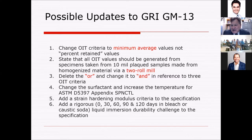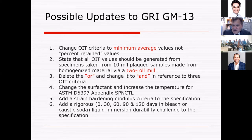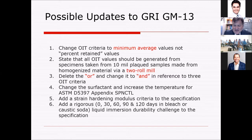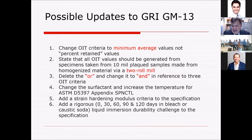What that minimum average value would be is going to be horse trading at its best. Second: state that all OIT values are from a 10 mil plaque made from homogenized material. The best homogenizing procedure we know is a two-roll mill — that's the best of the three techniques out there. This is going through ASTM and reared its head last week at ASTM D35 in both standard and high pressure. Third: I know the folks at Queens would like an 'and' instead of an 'or' for all three OIT criteria. This is assuming people are not educated consumers. Possibly it's time for this — I don't know if manufacturers will buy into it, but it can be talked about in the task group.